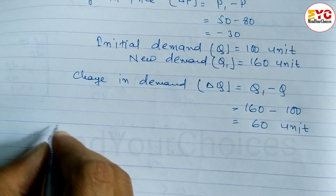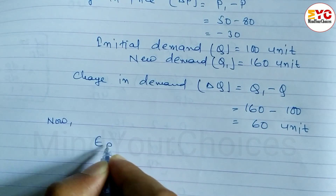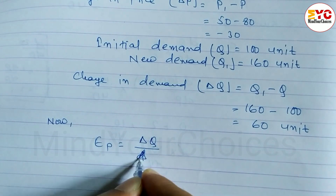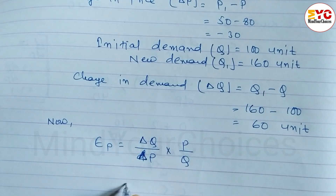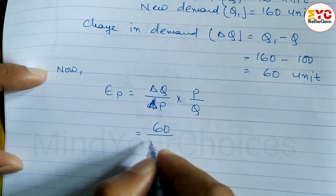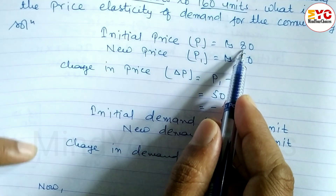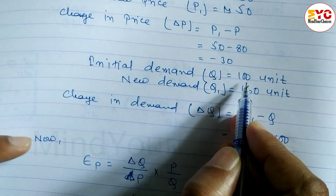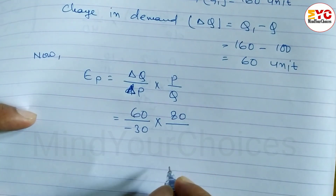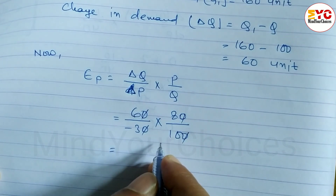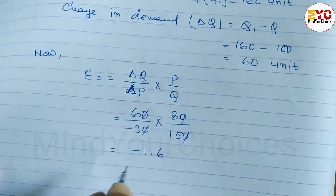Now we use the formula for price elasticity of demand. EP = (ΔQ / ΔP) × (P / Q). Change in demand ΔQ is 60, change in price ΔP is minus 30, initial price P is 80, and initial quantity Q is 100. Calculating: the zeros cancel and we get minus 1.6, which is the answer.